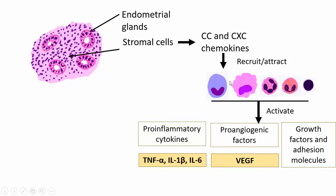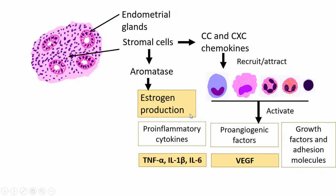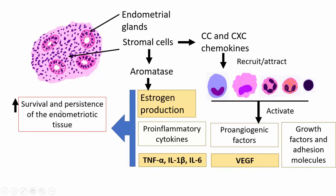So these chemokines recruit inflammatory cells and activate pro-inflammatory cytokines, pro-angiogenic factors, and growth factors. Apart from secreting chemokines, these stromal cells also secrete aromatase, which leads to increased estrogen production — that is very important. All this estrogen production and the inflammatory cytokines result in increased survival and persistence of the endometriotic tissue in a foreign location. This is an important factor in the pathogenesis of endometriosis.